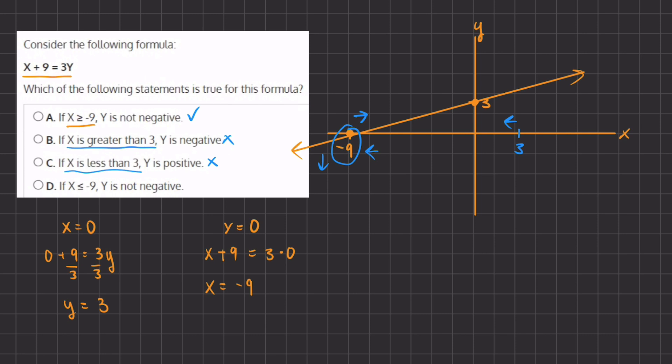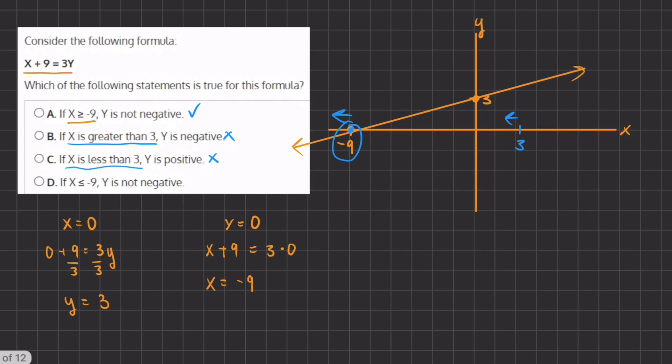And D states that if x is less than or equal to negative 9, so that is this direction of the negative 9, then y is not negative. Well, we see that at negative 9, the y isn't negative nor positive, but once it crosses to the left-hand side, the y's become negative, and therefore D is also incorrect, and A will remain our final answer.